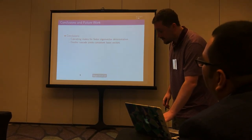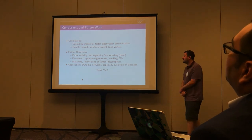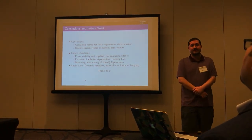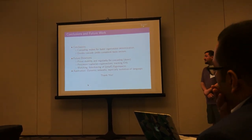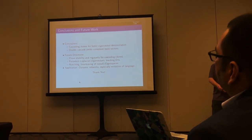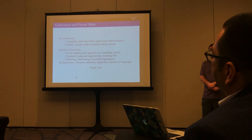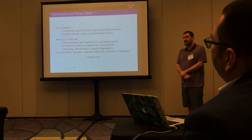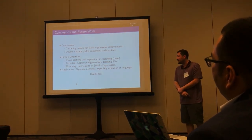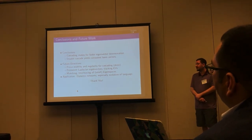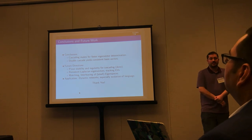In conclusion, cascading makes for faster eigenvector determination and allows consistent bases for viewing a dataset at different scales. Future directions include proving stability and regularity for cascading — which has already been done — developing a notion of persistent Laplacian eigenvectors, addressing issues with the continuous variable and properly assigning eigenvectors across parameters when eigenvalues move across each other, formalizing matching and interleaving of eigenspaces, and an application to the evolution of language.